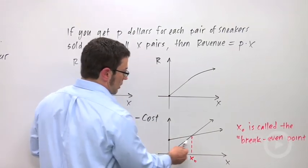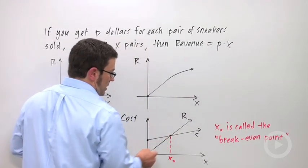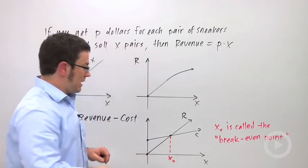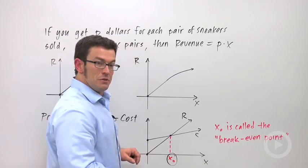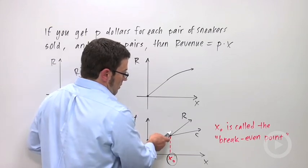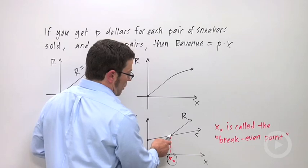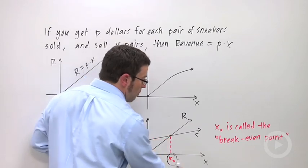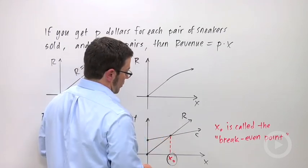And if you look at your cost function, so this is your cost function and your revenue function, the point at which they cross is called the break-even point. It's at this point where you're producing just the right number of shoes, where cost and revenue are exactly the same. Your profit will be zero, but it's at this point where you can start making a profit. If you produce more than x sub-zero shoes, you'll make a profit. Your revenue will be above your cost.